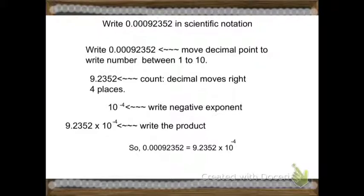First, write an example. Write 0.00092352 in scientific notation. Write 0.00092352, move the decimal point, and write between 1 to 10.